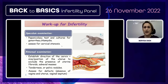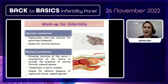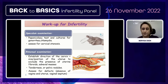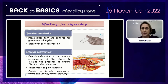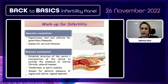Gynecologic speculum examination is the first-line exam in IVF and gynecologic clinics. We obtain a Pap smear, cultures for gonorrhea and chlamydia, and assess cervical stenosis. On manual examination we establish the direction of the cervix, size, position of the uterus, and exclude the presence of uterine fibroids, adnexal masses, tenderness, pelvic nodules, and vaginal or septal problems.